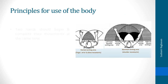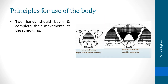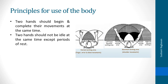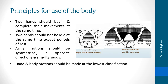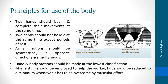Principles for use of the body: two hands should begin and complete their movements at the same time. Two hands should not be idle at the same time except during periods of rest. Arms motions should be symmetrical in opposite directions and simultaneous. Hand and body motions should be made at the lowest classification. Momentum should be applied to help the worker but should be reduced to a minimum whenever it has to be overcome by muscular effort.